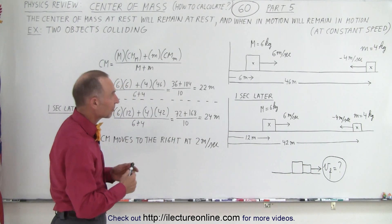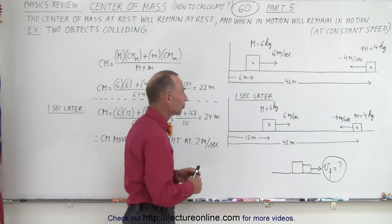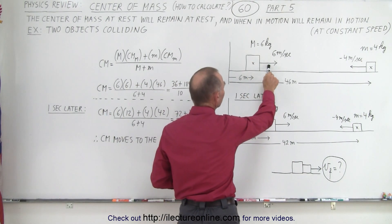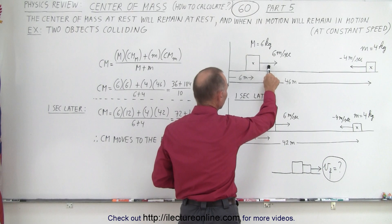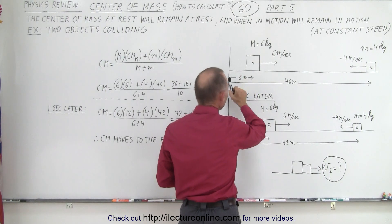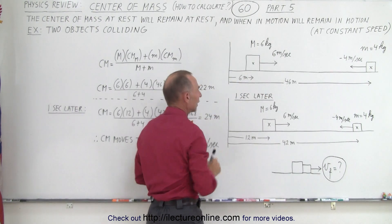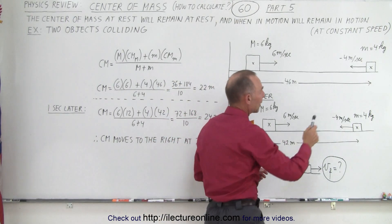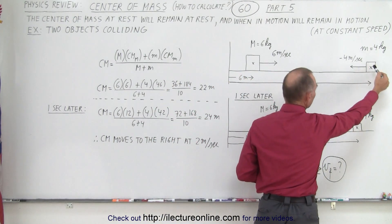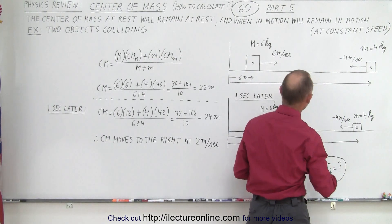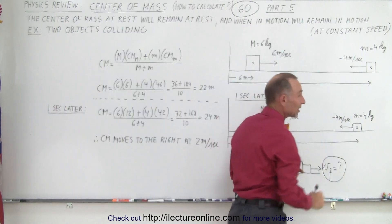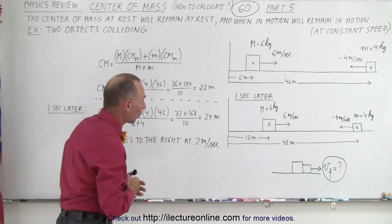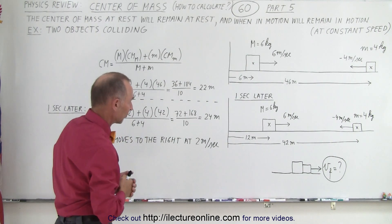Here's a good example of that. Let's say we have two objects: a big object with a mass of 6 kg moving to the right at 6 m/s, and at this moment in time it is 6 m away from a point of reference. We have another mass of 4 kg moving to the left at 4 m/s, at a distance of 46 m away from that same point of reference.